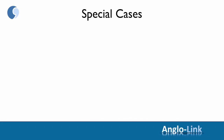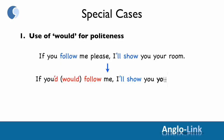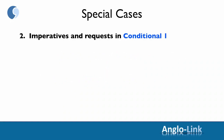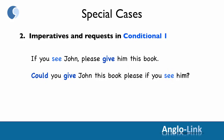Let's look at some special cases. The first one is the use of 'would' for politeness. Here we have a first conditional sentence: 'If you follow me, please, I'll show you your room.' You can add 'would' to the first part to make it sound more polite: 'If you'd follow me, I'll show you your room.' Another special case is imperatives and requests in conditional one. For example: 'If you see John, please give him this book' — using an imperative in the second clause instead of future simple. Or: 'Could you give John this book, please, if you see him?' — a request formulated with 'could you'.